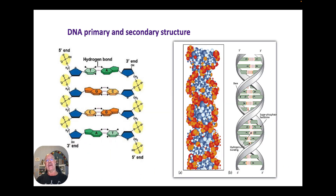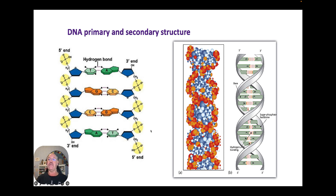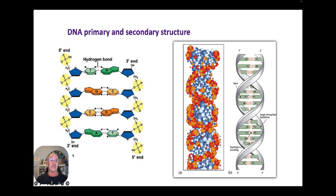DNA also has a primary and a secondary structure. The primary structure is the ladder — the uprights are the sugar-phosphate backbone and the rungs are the bases. The secondary structure is that it winds up into a double helix. There's also the detail of the 3' end and the 5' end, which will be covered in more detail in another video.